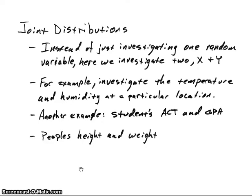We've been looking at random variables one at a time. Let's take a look at what happens when we look at two random variables at the same time. For example, suppose we want to investigate temperature and humidity at a particular location — we know there's going to be some relationship between them, and we want to know what that relationship is in a probabilistic manner. Also, suppose we want to look at students' ACT scores and GPA scores; there's going to be some correlation there. Or suppose we want to know the relationship between a person's height and weight. So joint distribution functions will tell us what that relationship is between two random variables — we'll just look at two random variables.